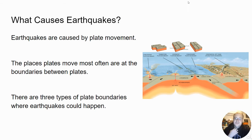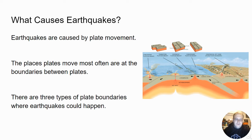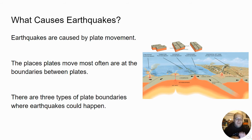So what causes these earthquakes? They're really caused by plate movement, and the places that plates move most often are at the boundaries between plates. Here I've got a picture of the three different types of plate boundaries: a divergent plate boundary in the center, a convergent plate boundary, and a transform boundary out in the ocean. Convergent boundaries are when two plates are coming together, divergent boundaries are when they're splitting apart, and transform boundaries are when they are going in opposite directions.